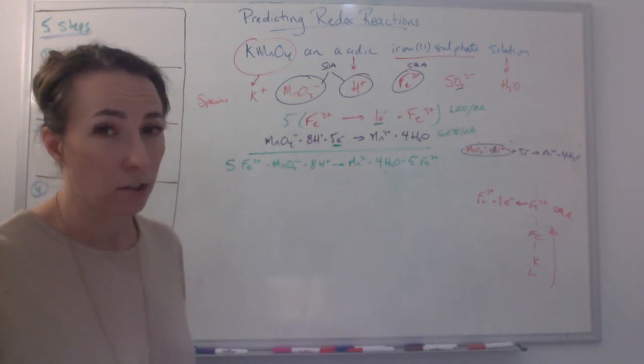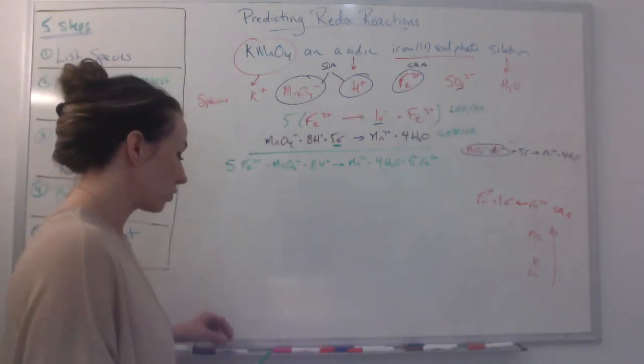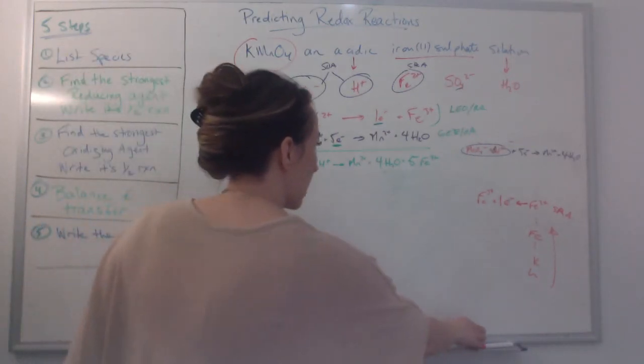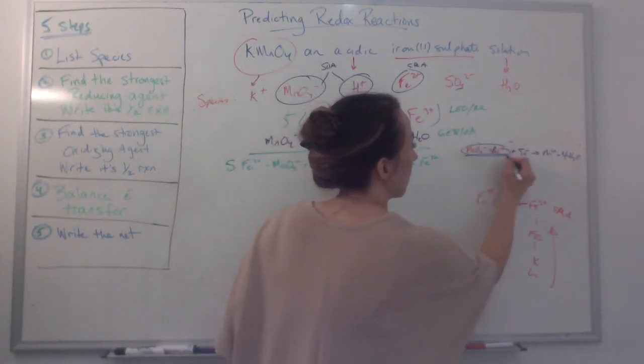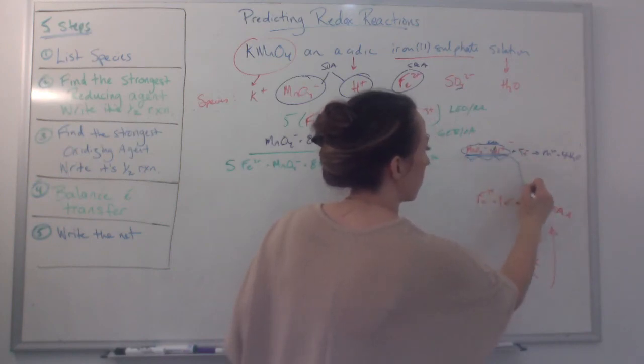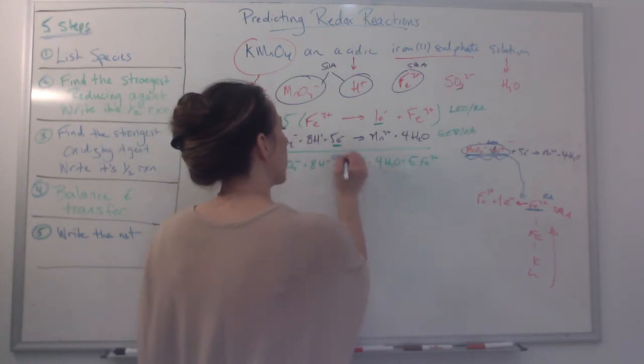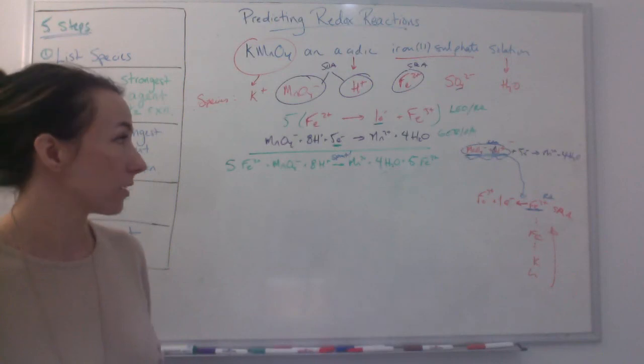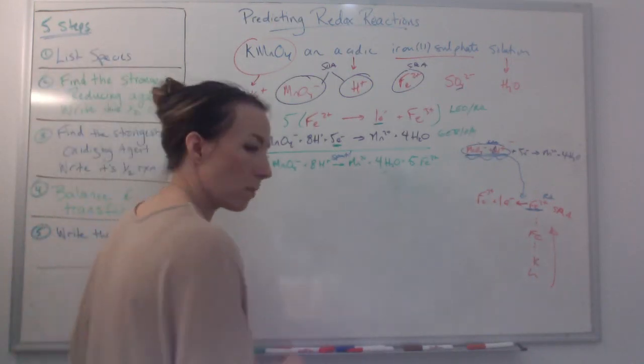The last question it might ask you, and it's good to practice this too, is about the spontaneity rule. So is this a spontaneous reaction or not? If I look at my data booklet, I can see that my oxidizing agent is above my reducing agent. This waterfall will flow downwards spontaneously. So this will spontaneously happen. I will get a spontaneous reaction here. So that's the five step method. Let's do one more example together.